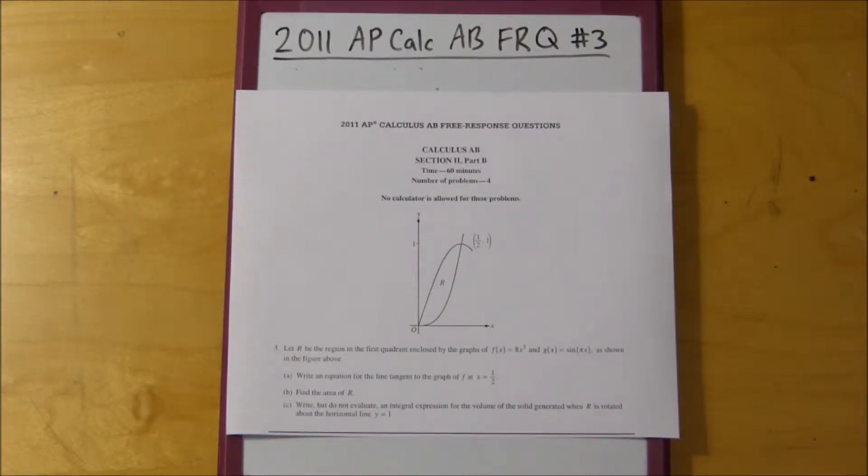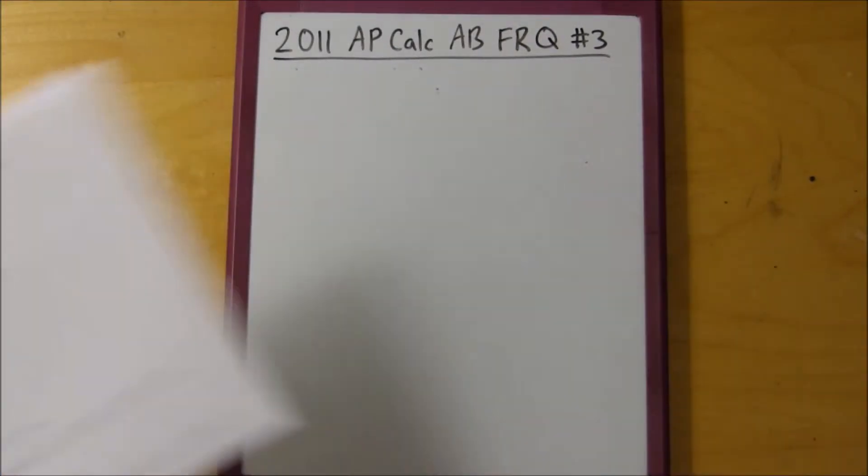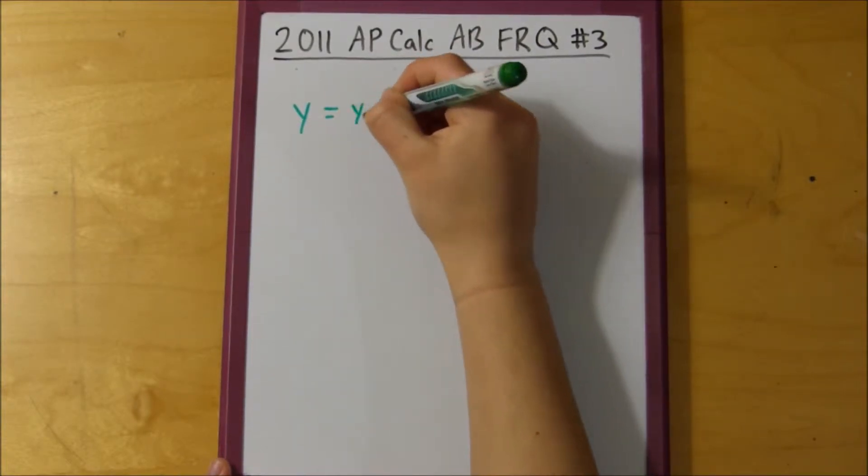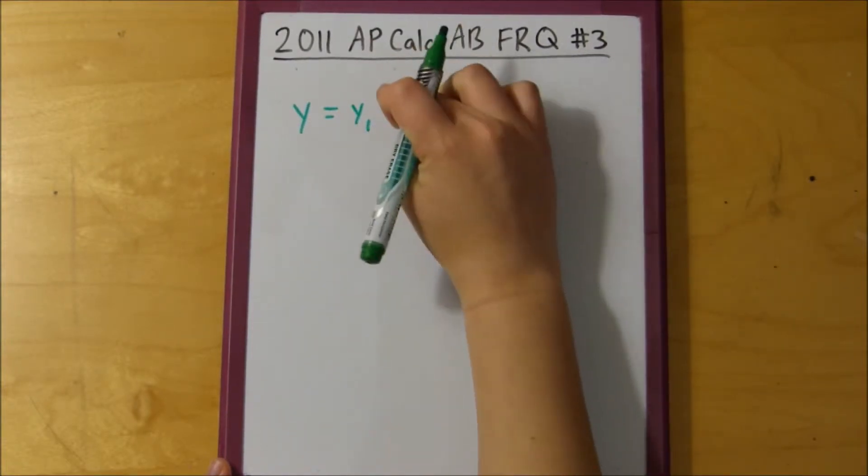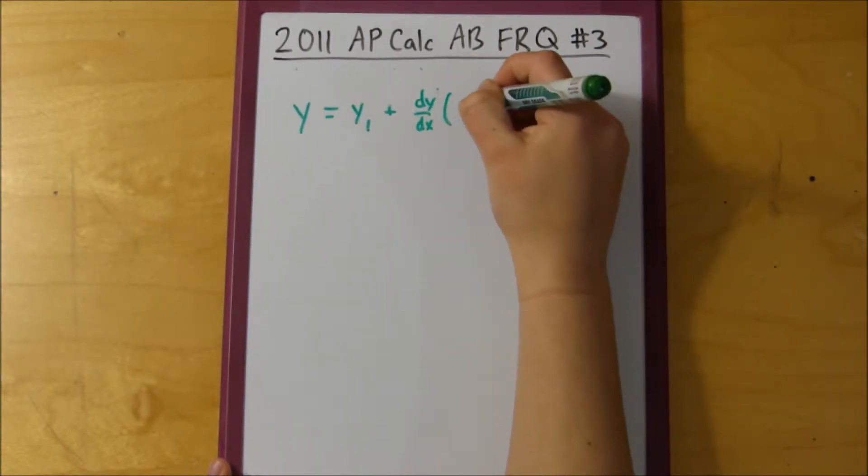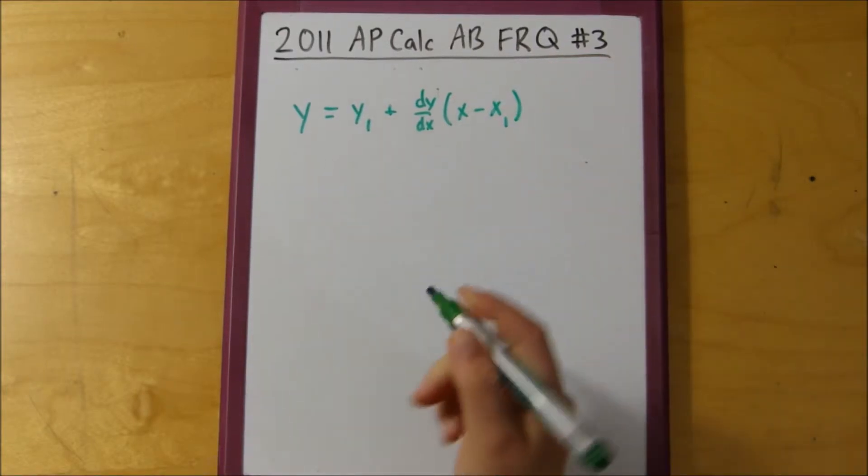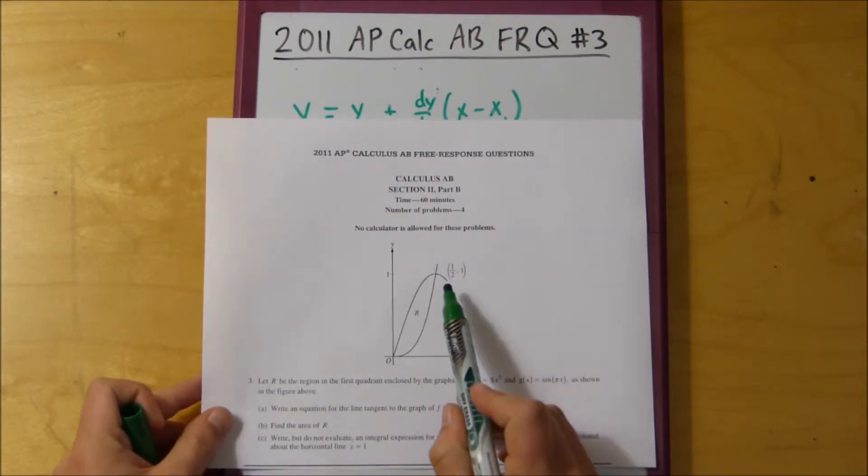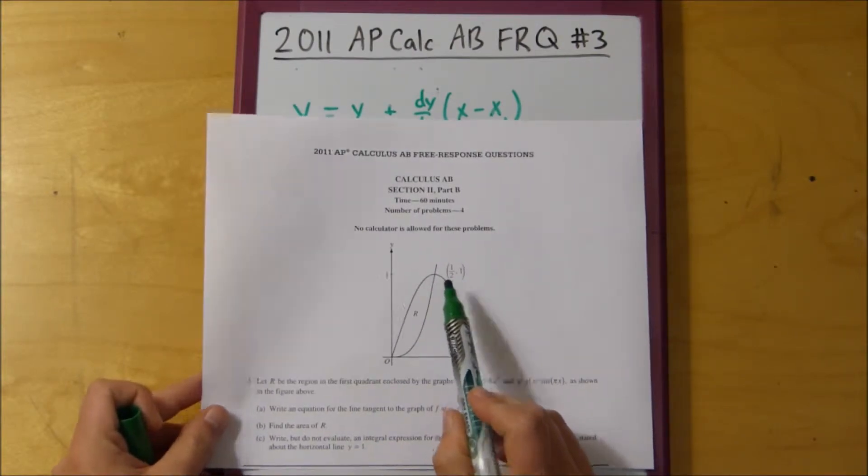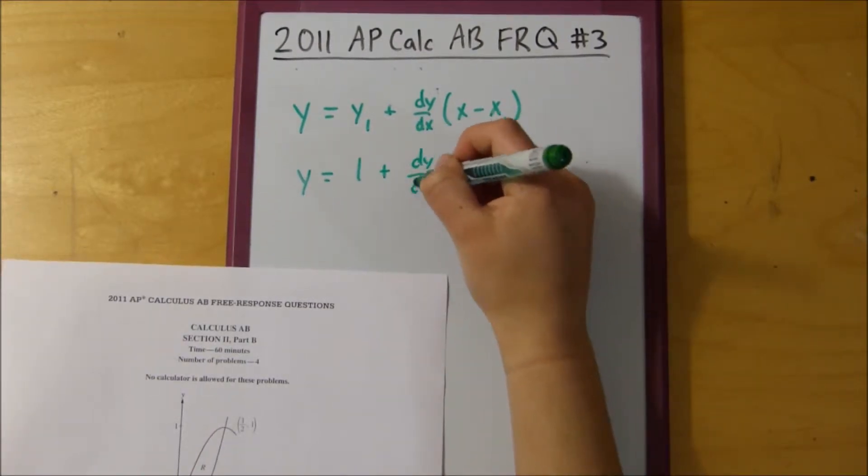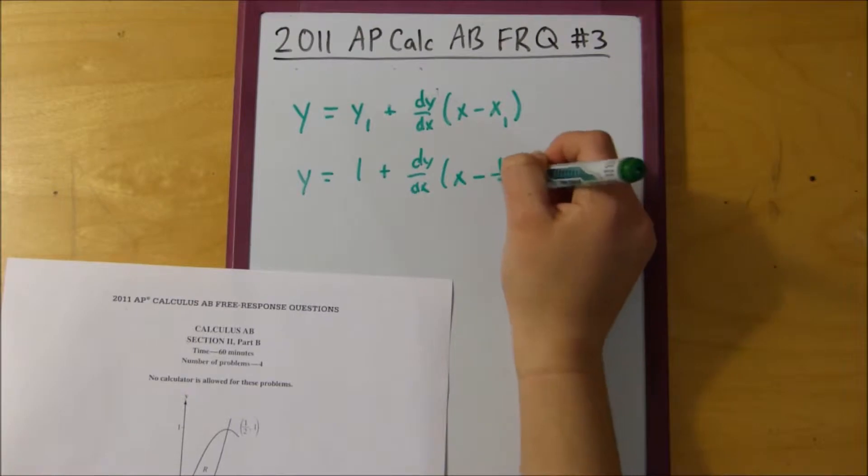The first thing we're going to want to do is look at what we have to solve. So I know point-slope form is y equals y1 plus dy/dx of x minus x1. We were given y1 and x1, that's 1 half and 1, so y equals 1 plus dy/dx times x minus 1 half.